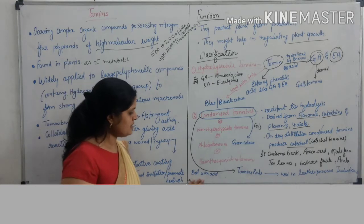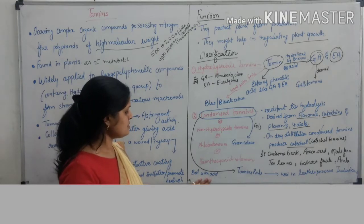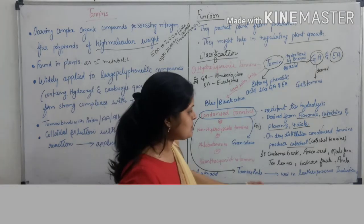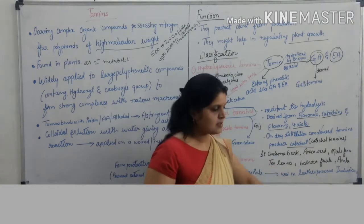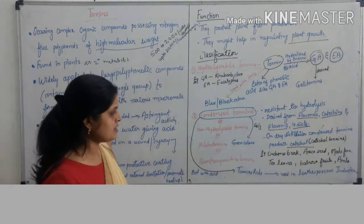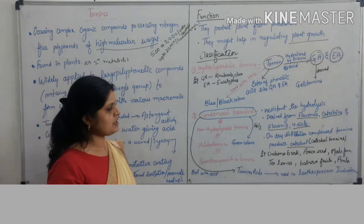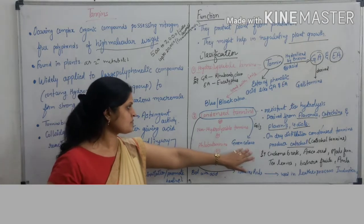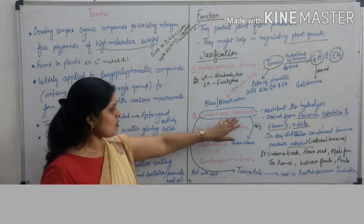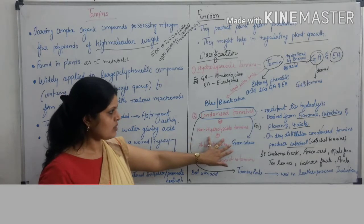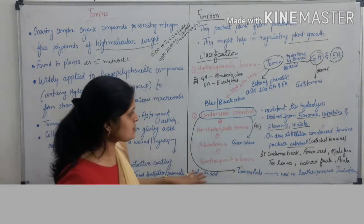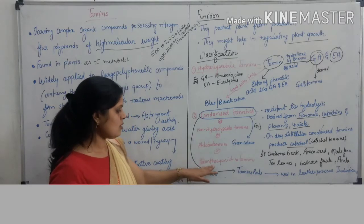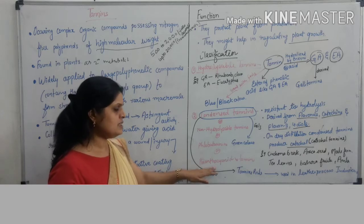Condensed tannins, when treated with acid, form a red precipitate called phlobaphene, which is used in the leather processing industry. When treated with 5% ferric chloride solution, they produce a greenish-brown color. Condensed tannins are also known as non-hydrolysable tannins because they are resistant to hydrolysis, and are also known as phlobatannins and proanthocyanidins.